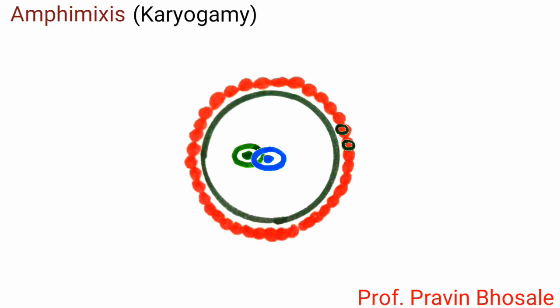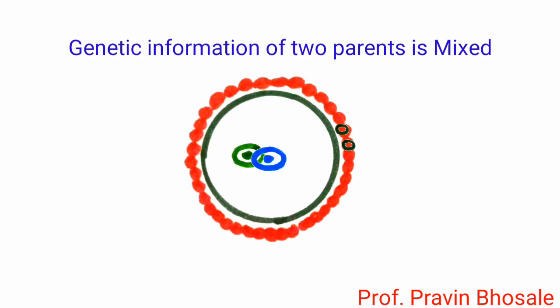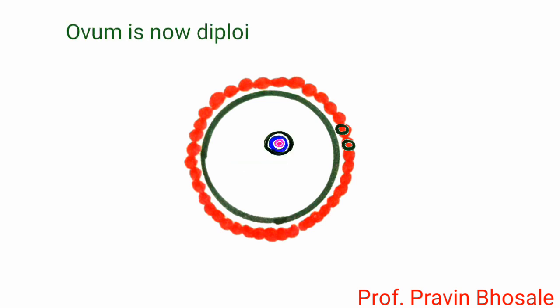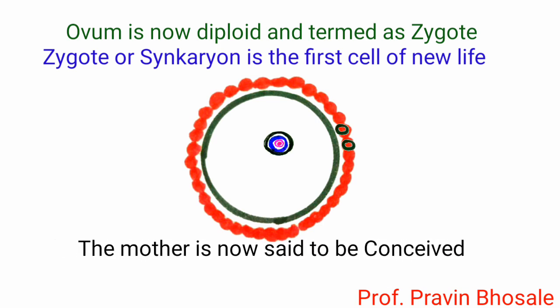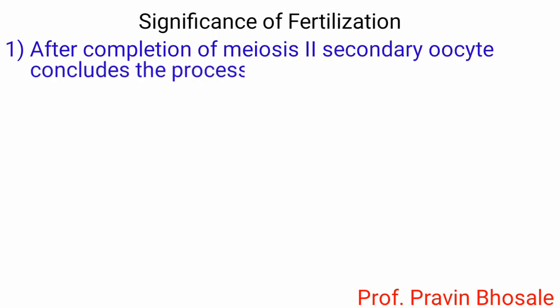Mixing of chromosomes of the male and female pro-nucleus takes place. This is called amphimixis or karyogamy. Genetic information of two parents is mixed. The ovum is now diploid and termed as zygote. The zygote, also called syncarion, is the first cell of new life. The mother is now said to be conceived. After completion of meiosis II, the secondary oocyte concludes the process of oogenesis.